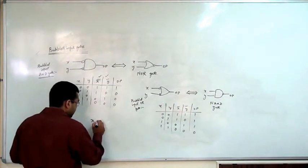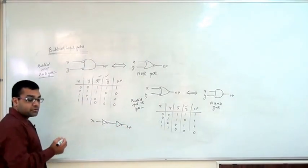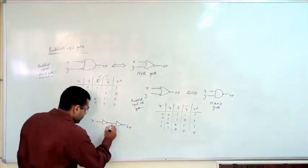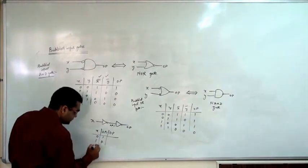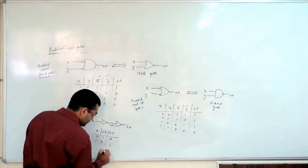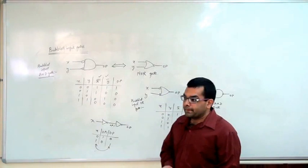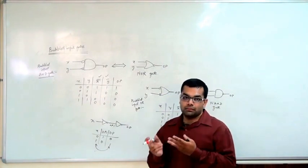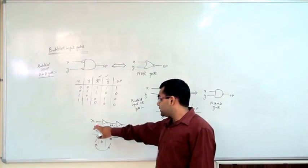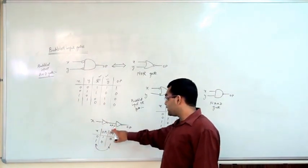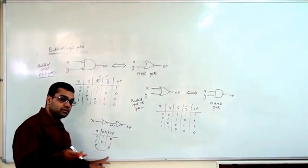Just another concept: if you take a variable x, put it into a NOR gate to get OP1, and then put OP1 into another NOR gate, you get x back. You can verify: input 0 → OP1 is 1 → output is 0; input 1 → OP1 is 0 → output is 1. So if you complement a variable an even number of times in NOR gates, you get the variable back.